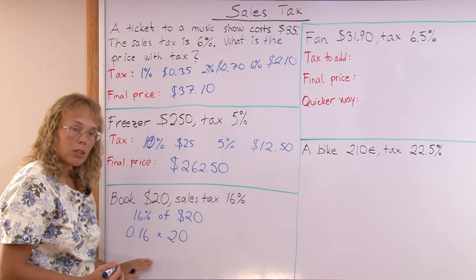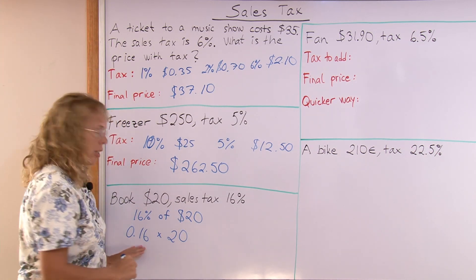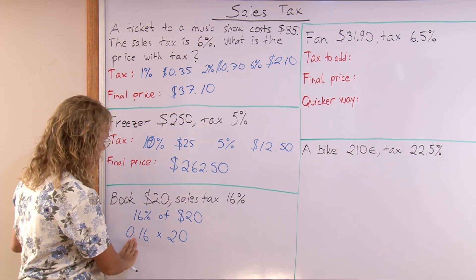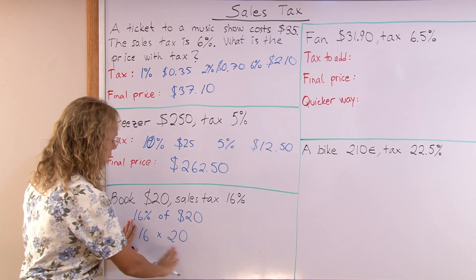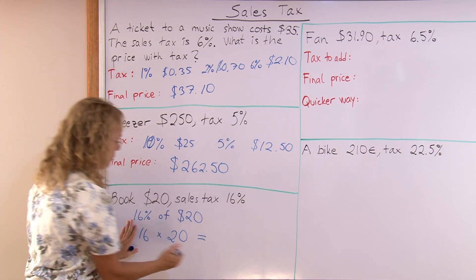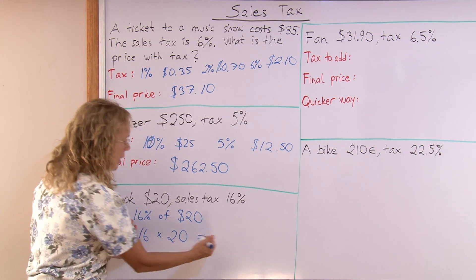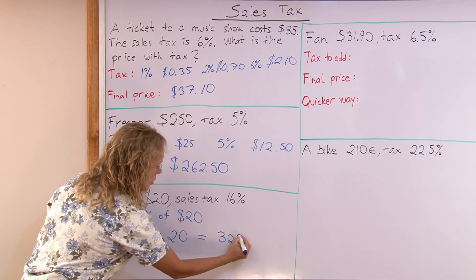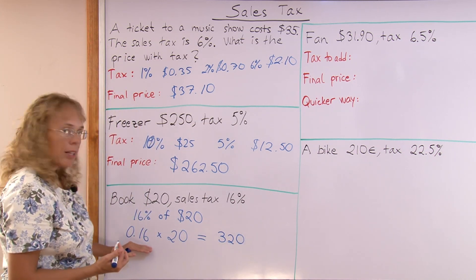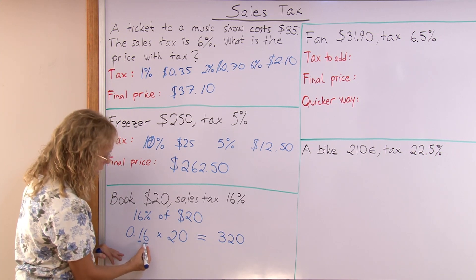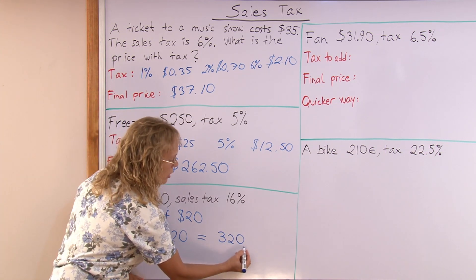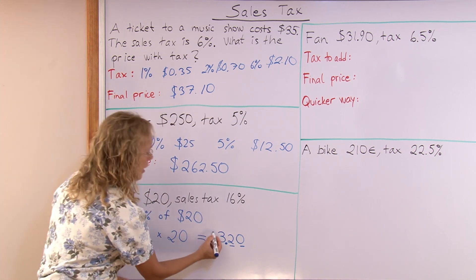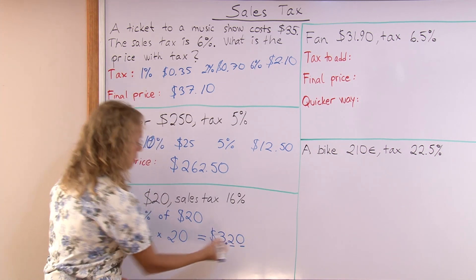To multiply using a decimal number, first multiply as if there was no decimal point at all. It is 16 times 20, which is of course 16 times 2 and then tag a 0 — that's 320. But now we have to think how many decimal digits are here, and that many decimal digits need to be put in the answer.